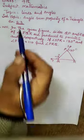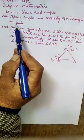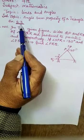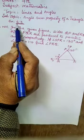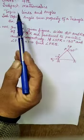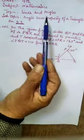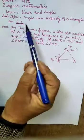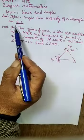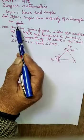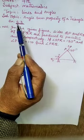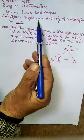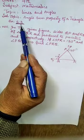As-salamu alaikum, today we will talk about this video. This topic is about lines and angles. In this video, we will discuss the angle sum property of a triangle. This is exercise number 6.3, the reference for angles and properties of triangle theorem.